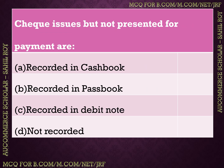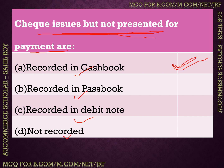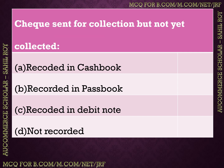Next question: checks issued but not presented for payment — options: recorded in cash book, recorded in passbook, recorded in debit note, not recorded. The correct answer is option A — recorded in cash book. A check issued but not yet presented for payment is recorded in the cash book.